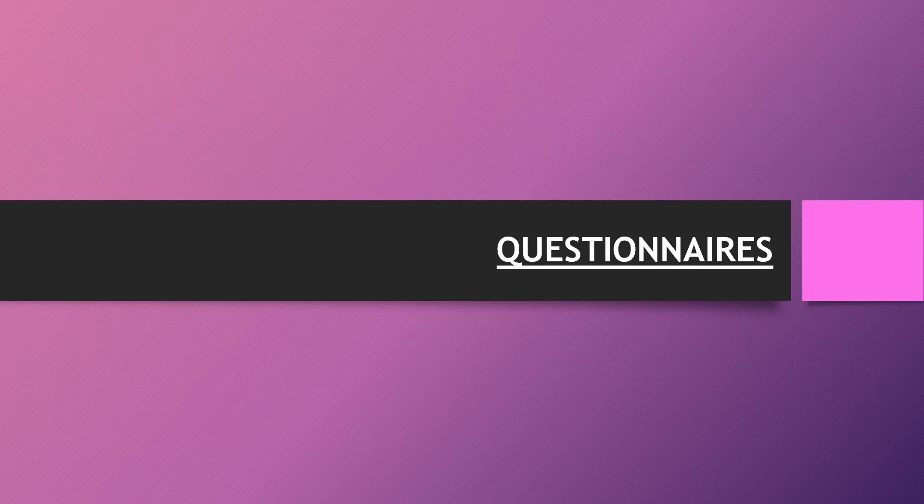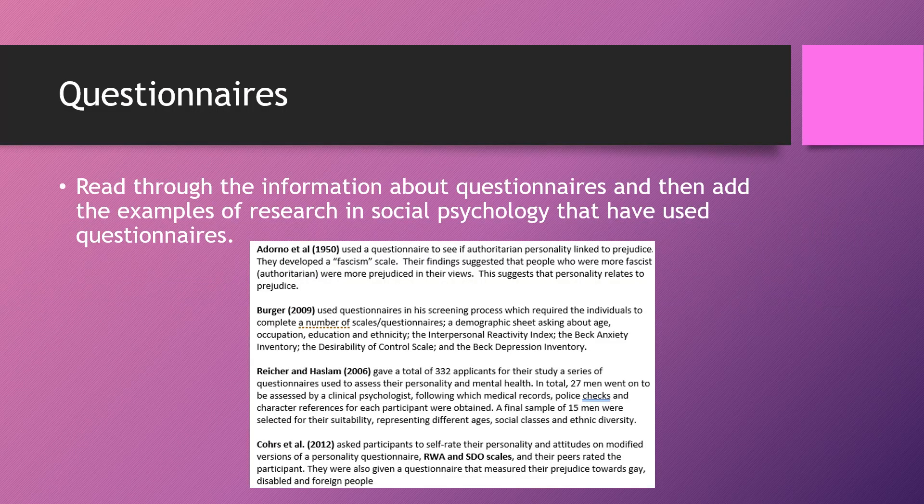We're going to start off by looking at questionnaires. You need your social psychology booklets — turn to page 73 towards the back in the methods section, and you can work through the information as we go through the different types of questionnaires. Page 73 gives you introductory information: a questionnaire is a set of written questions answered by respondents who self-report their data. The written format means there's very little flexibility — the questions are pre-written, so it is structured.